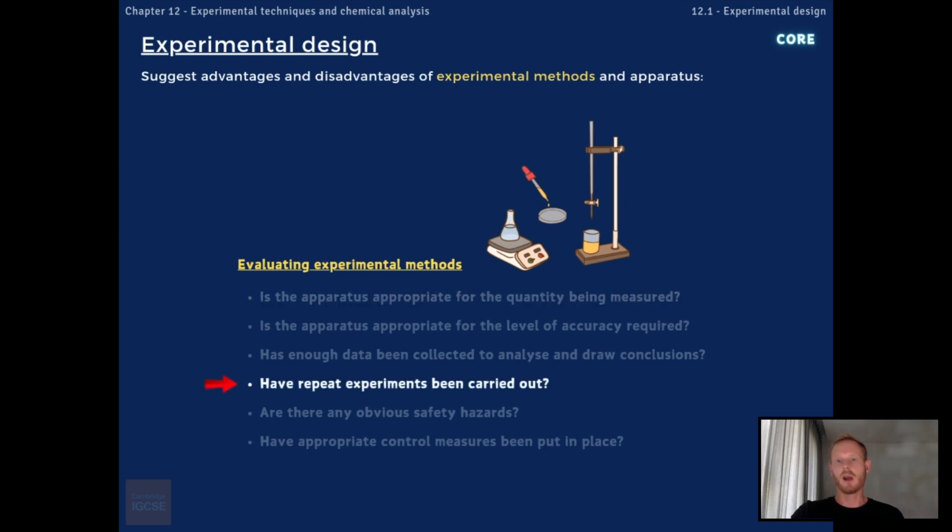Whether or not repeat experiments were carried out which help us to improve reliability and identify potential errors, and whether appropriate control measures were put in place in order to limit the effect of extraneous variables like temperature or pH.